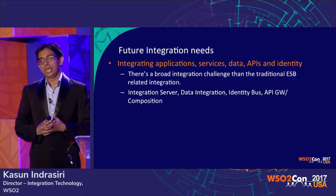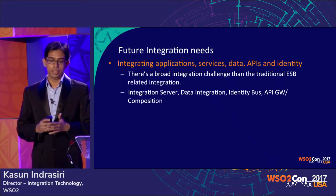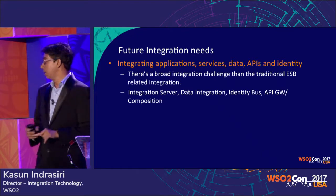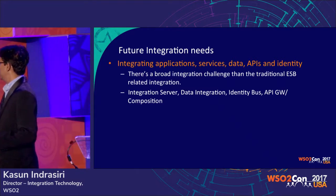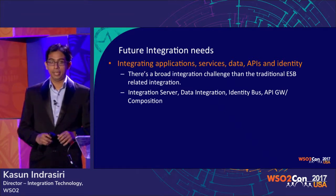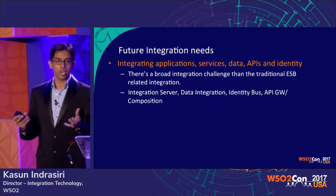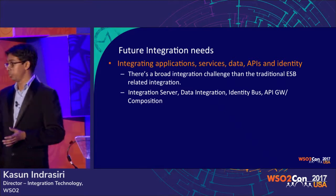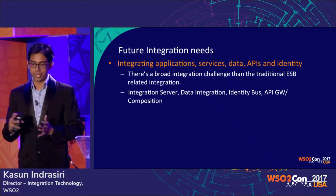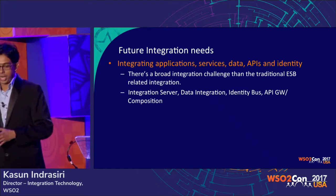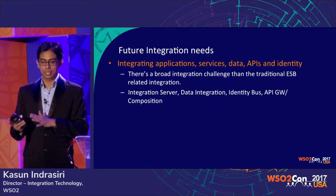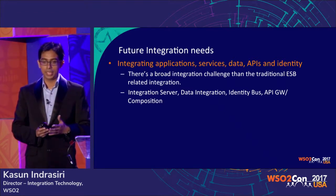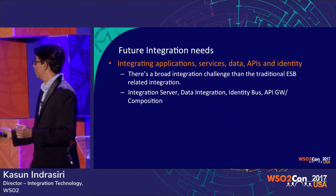There is also a need to integrate not just services and data, but different types of applications, data, and identity. When you have two different identity management systems, you need to integrate and federate them. Additionally, API gateway and API composition are becoming key aspects of modern enterprises, and there are diverse integration areas with similar underlying attributes.